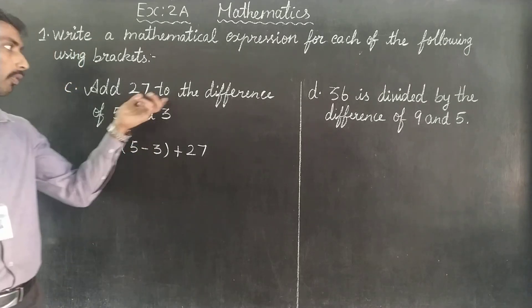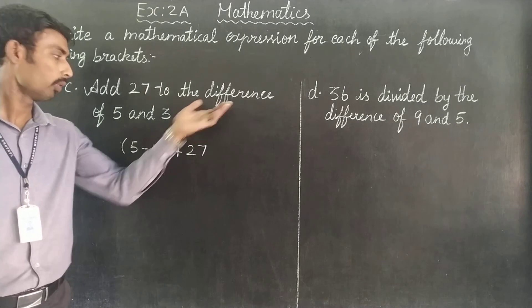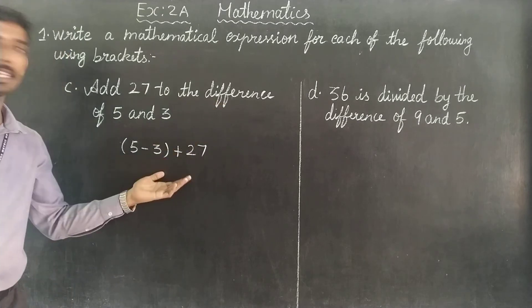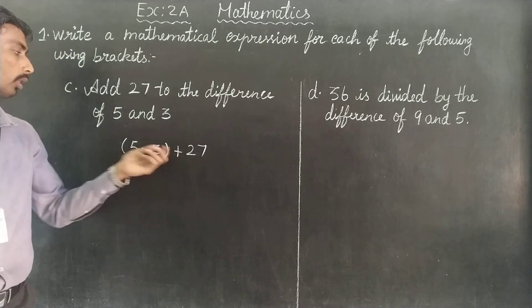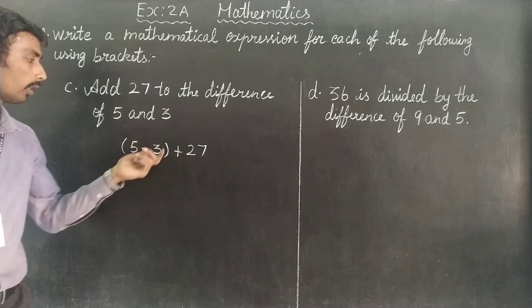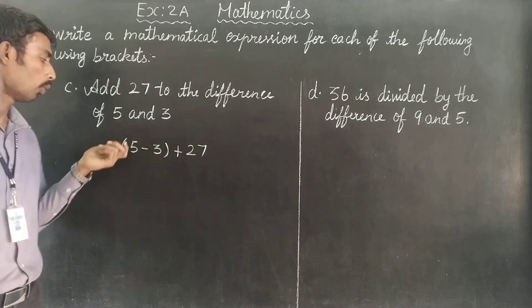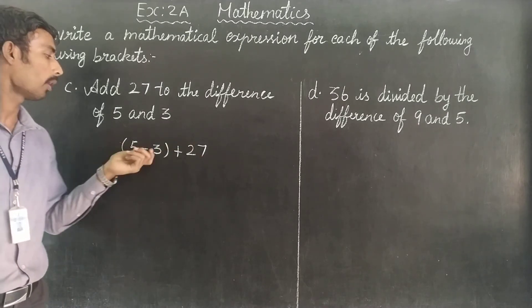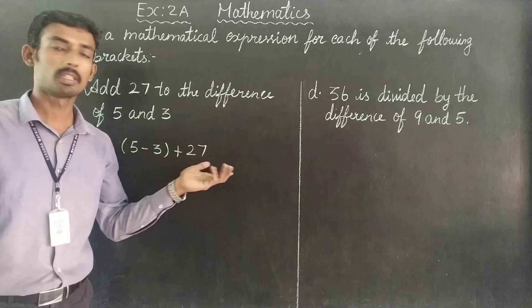So this question's full mathematical expression answer: you can write 5 minus 3 plus 27, or more correctly: open bracket 5 minus 3 close bracket plus 27.